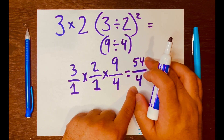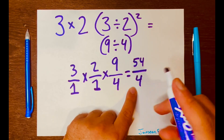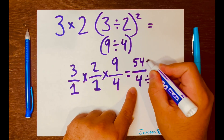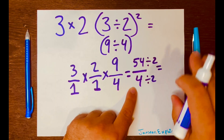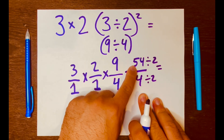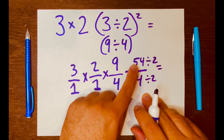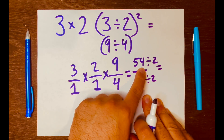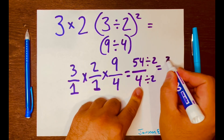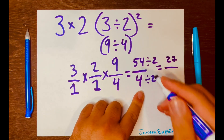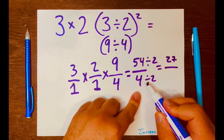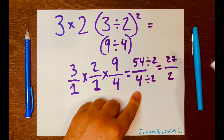The top and bottom are both even, so I can divide by two to simplify. Half of 54: half of 50 is 25, and half of 4 is 2, so 25 plus 2 is 27. So 54 divided by 2 is 27, and 4 divided by 2 is 2, giving us 27 over 2. This cannot be simplified further.